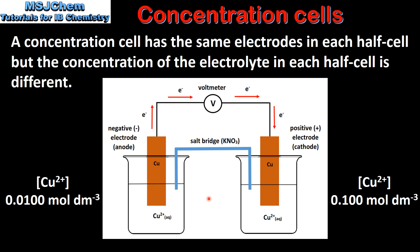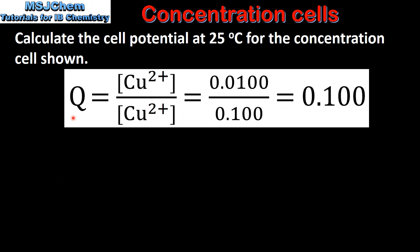The voltage produced in the reaction can be calculated using the Nernst equation. We will start by calculating the reaction quotient Q. Q is equal to the concentration of the half cell that undergoes oxidation, that's the anode, divided by the concentration of the half cell that undergoes reduction, that's the cathode.